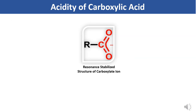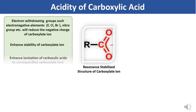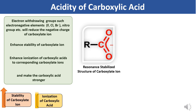Now we will see which types of groups can increase and decrease the strength of carboxylic acids. Electron withdrawing groups — such as electronegative elements like fluorine, chlorine, bromine, and nitro groups — will reduce the negative charge on the carboxylate ion. Thus these groups enhance the stability of the carboxylate ion and promote ionization of carboxylic acids. By this way, electron withdrawing groups enhance the ionization of carboxylic acid into the corresponding carboxylate ion and make the carboxylic acid stronger.